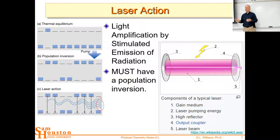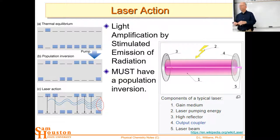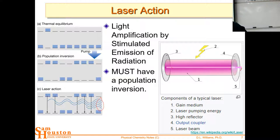You can run these in continuous mode by constantly supplying visible light. You can also use a grating or other element to keep just one particular laser line coming out. The general components are: the gain medium, the pump light, and the resonant cavity with two mirrors. Coming out of the output coupler is the laser beam.